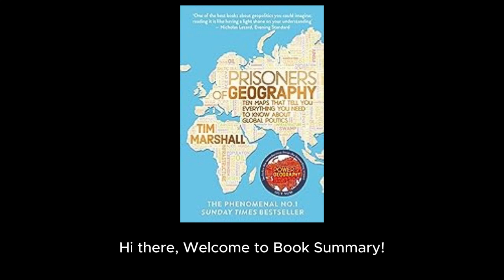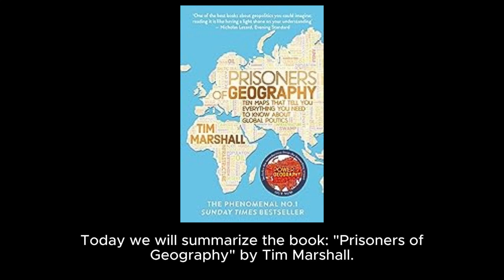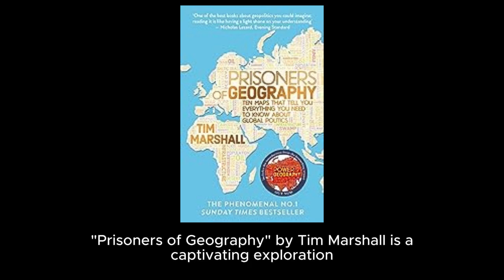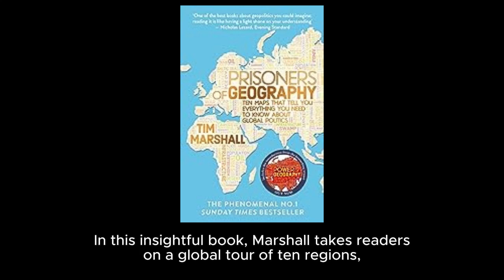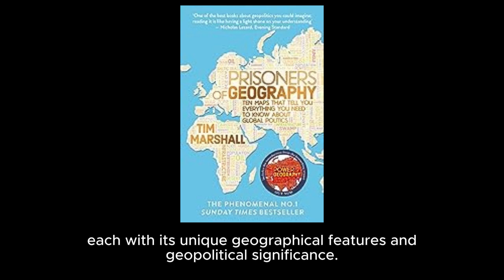Hi there, welcome to Book Summary. Today we will summarize the book Prisoners of Geography by Tim Marshall. Prisoners of Geography is a captivating exploration of how geography shapes the political, economic, and social destinies of nations. Marshall takes readers on a global tour of 10 regions, each with its unique geographical features and geopolitical significance.